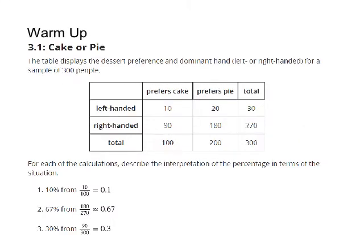Here's your warm-up. There's a two-way table here, and take a look at the three situations below. Try to write down or describe the interpretation of the percentage in terms of the situation — put words to go with the 10% and where it came from in the table. Pause your video, write down your answers, and then when you unpause, you can see what the responses are.